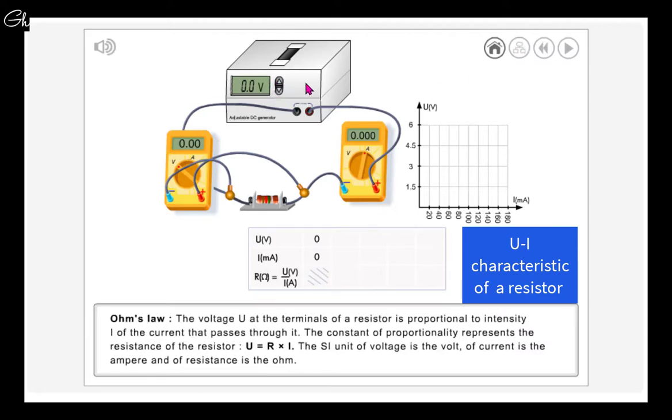To understand the concept of Ohm's law, we set this circuit: a voltage source in series with an ammeter and a resistor, and here we have a voltmeter in parallel with this resistor. Starting with zero volts, the intensity of the current appears to be zero. Once we increase the voltage, the current appears to be 43 milliamps. Increasing this voltage to three volts, the intensity of the current increases.